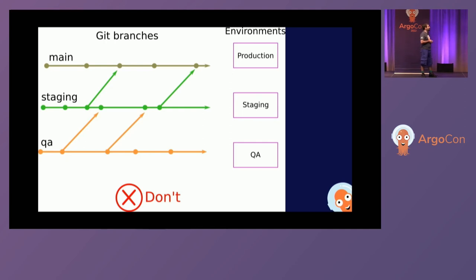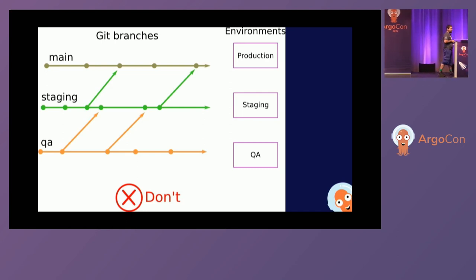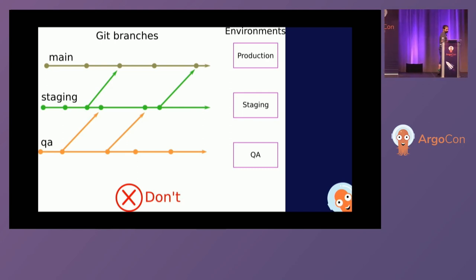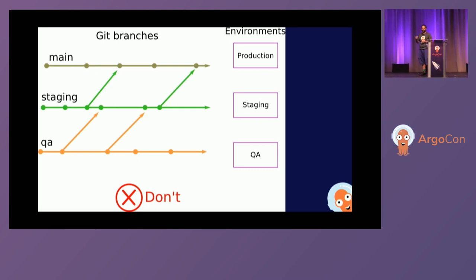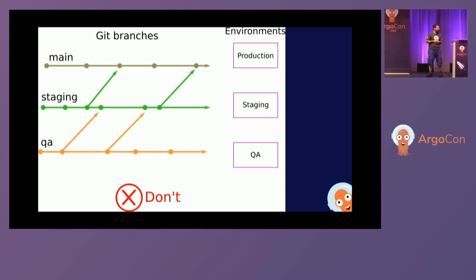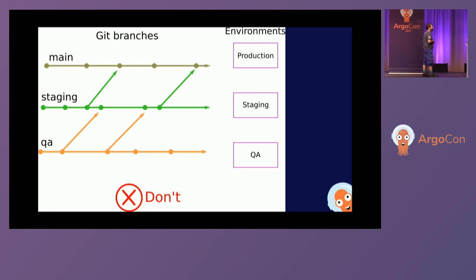The anti-pattern I'm warning against is having long-running branches that always exist, often named after environments — staging, QA, production or main. The way promotions work in this pattern is: you have changes in QA, you do a git merge to the next environment, then another git merge to the next. This is the pattern you should not adopt.